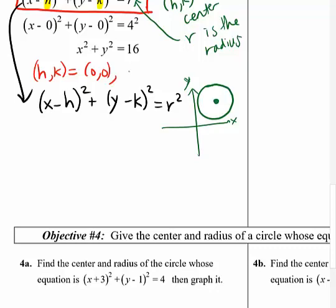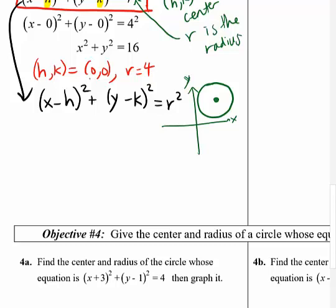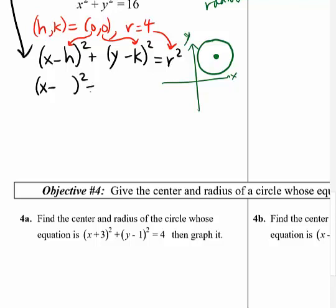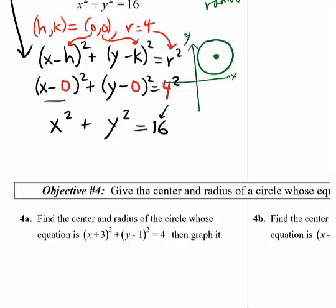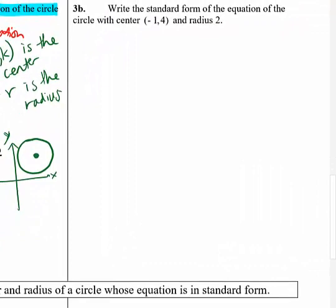Write the standard form of the equation of the circle with center (0, 0) and radius 4. Start with the general standard form where h, k, and r are unknown. The center is (0,0) so h=0, k=0, and r=4. Replace h with 0, k with 0, r with 4. Simplify: x minus 0 is just x, y minus 0 is just y, 4 squared is 16. So the equation is x squared plus y squared equals 16.